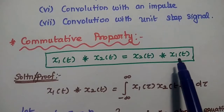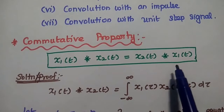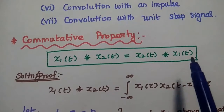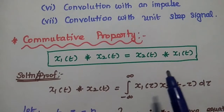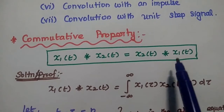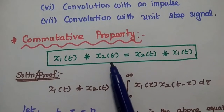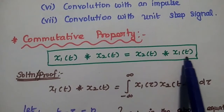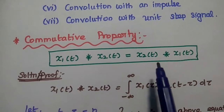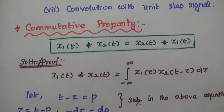Changing the order of the signals doesn't affect the operation — we get the same result even though the order of the signals is changed. Here it is X1 of t convolved with X2 of t, and here it is X2 of t convolved with X1 of t. For both cases, we get the same answer.